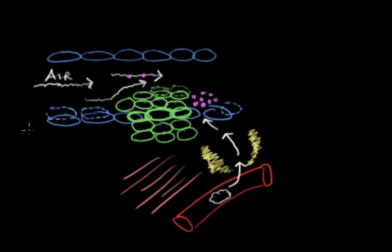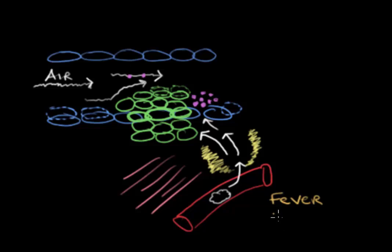Not only is the immune system responding to lung infections, it's also responding to the lung cancer cells themselves because it recognizes them as foreign. With all this activity, lung cancer patients will run an ongoing fever as a response to chemicals secreted by immune cells. The immune system is really running a marathon here and requires a lot of energy, and unfortunately patients have trouble keeping up with these energy demands, which contributes to unintentional weight loss.